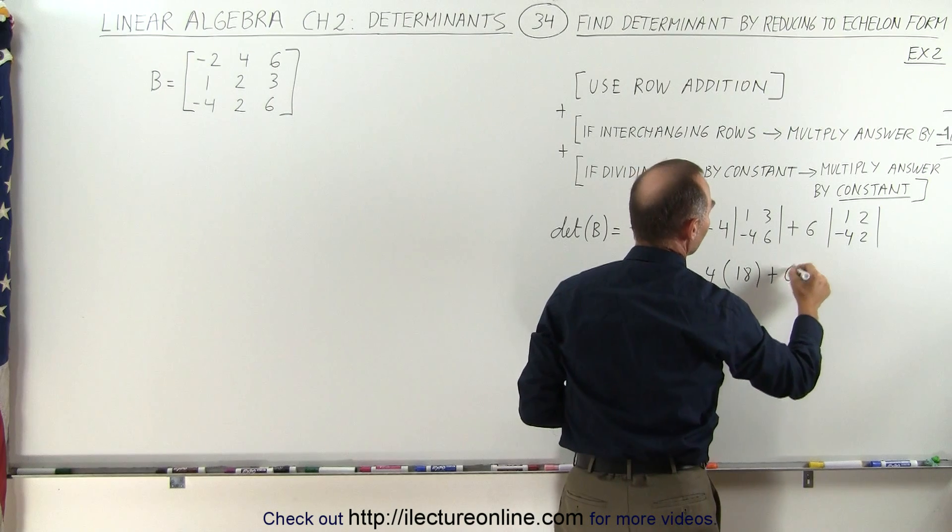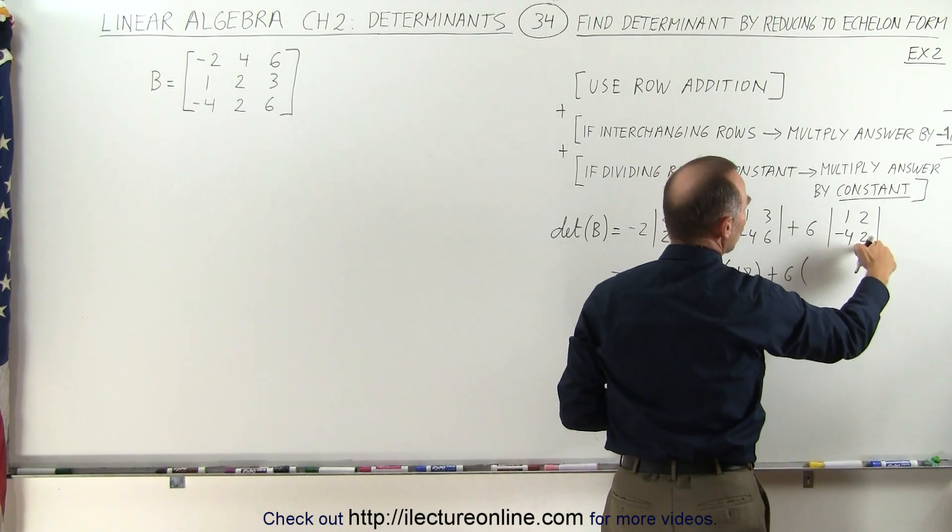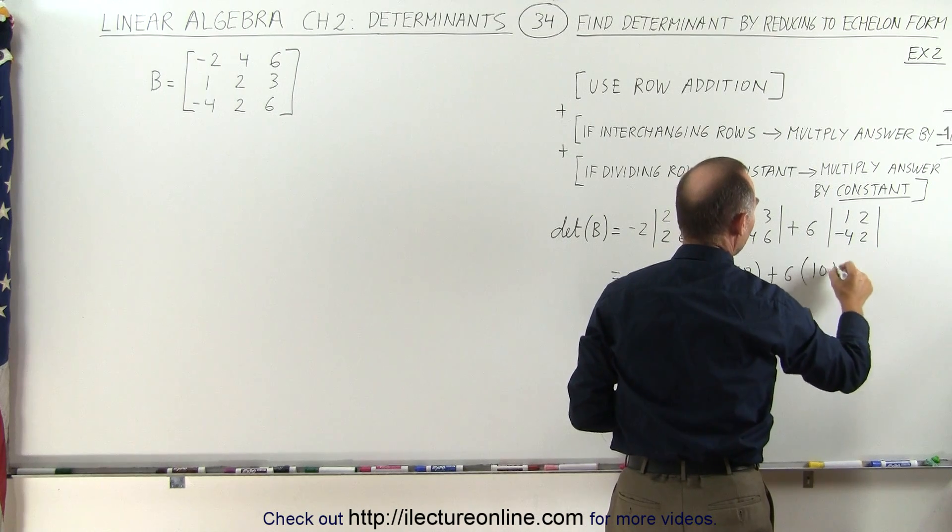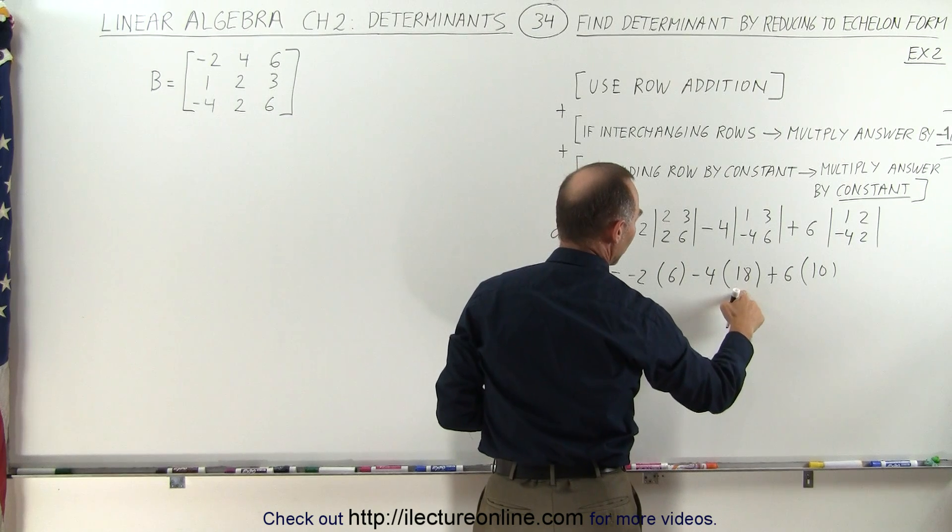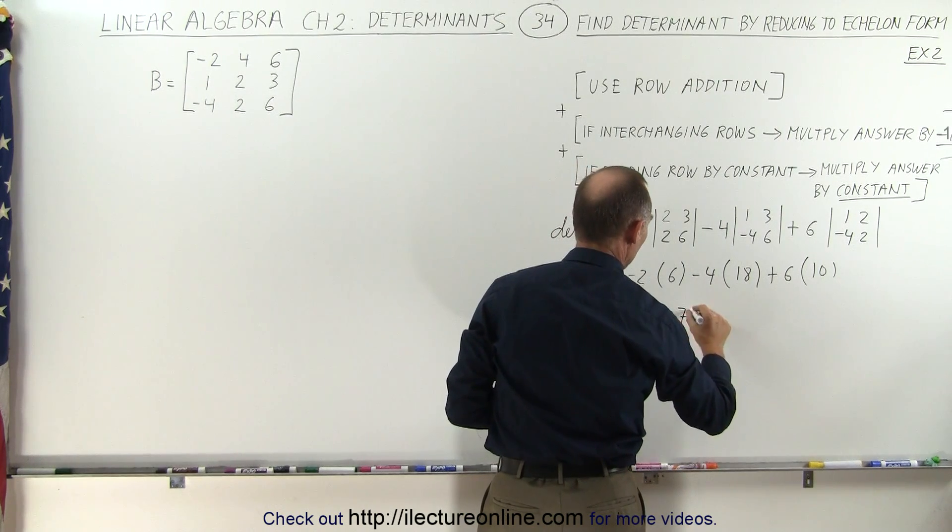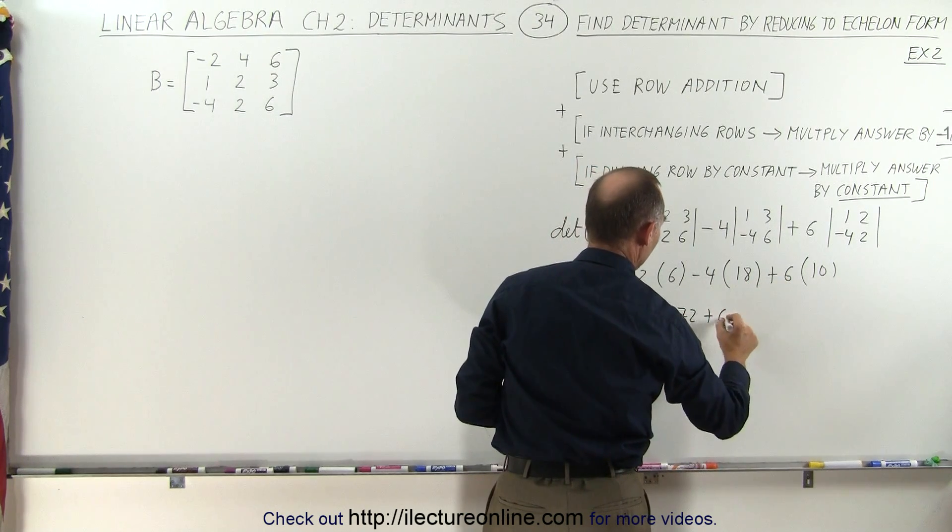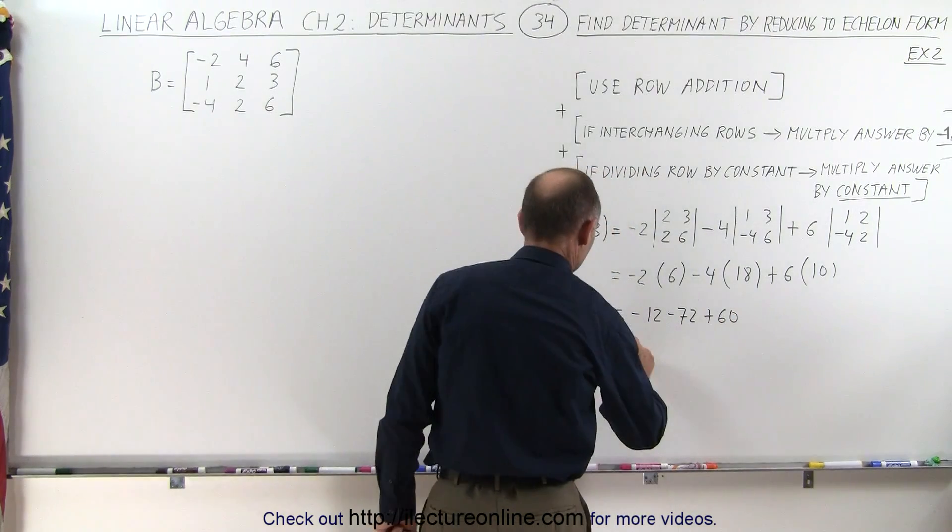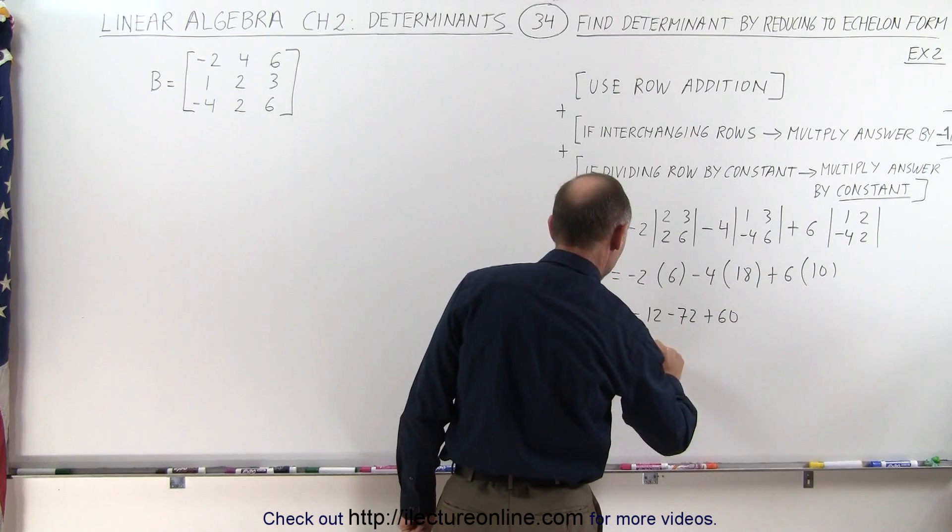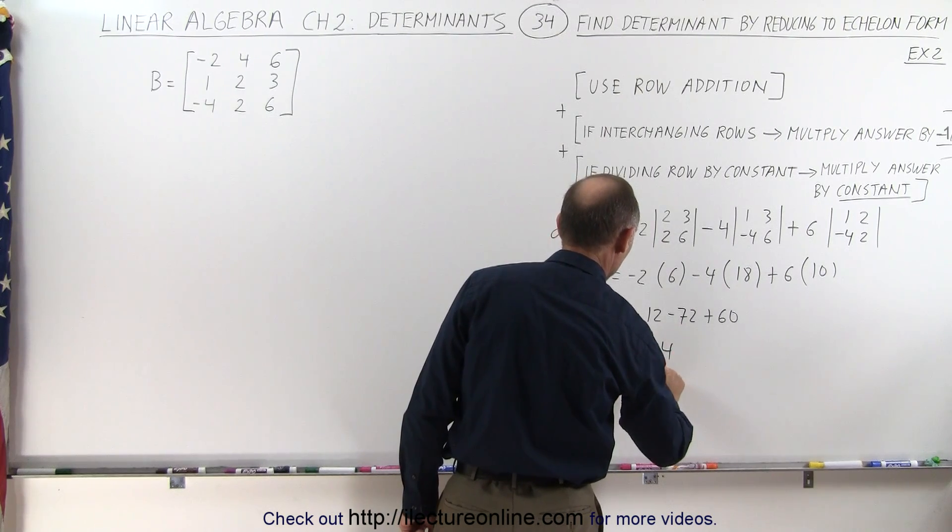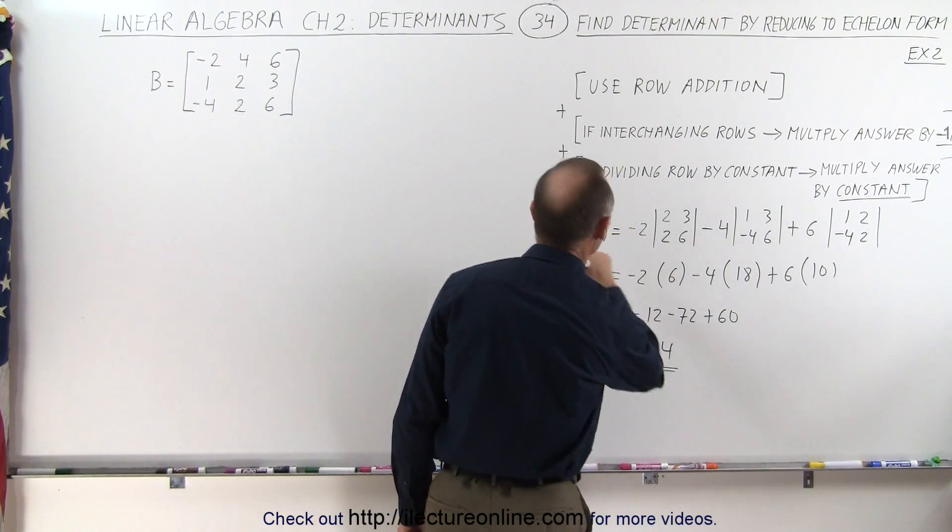And here we get plus 6 times, that gives us 2 minus and minus 8, that's 2 plus 8, which gives us 10. And then, continuing, we get minus 12, this here would be minus 72, and that gives us plus 60. So this is equal to a minus 84 plus 60, that's a minus 24, which is the determinant of the matrix B.